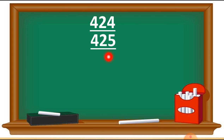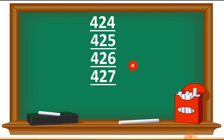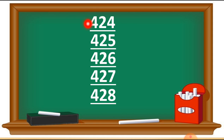After 25, the number 26 will come, so we write 426. After 26, the number 27 will come, so we write 427. After 27, the number 28 will come, so we write 428. This way — 424, 425, 426, 427, 428 — we have to complete this number table.